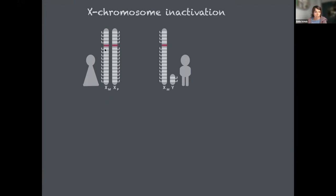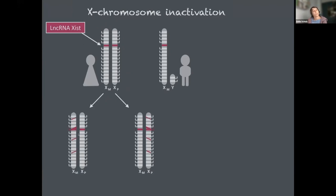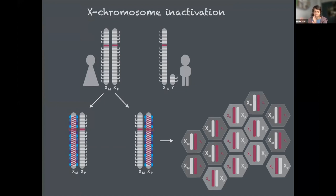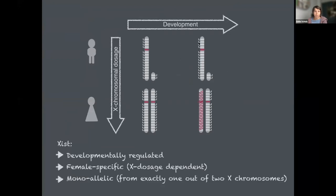X-inactivation is initiated by XIST, which is a long non-coding RNA. It's upregulated during early embryogenesis from exactly one out of two X chromosomes in each cell, but the selection of which X will upregulate XIST is random. XIST then coats the X chromosome, recruits a variety of silencing complexes, and leads to nearly chromosome-wide gene silencing. This silent state is then inherited throughout all further cell divisions throughout the life of the organism.